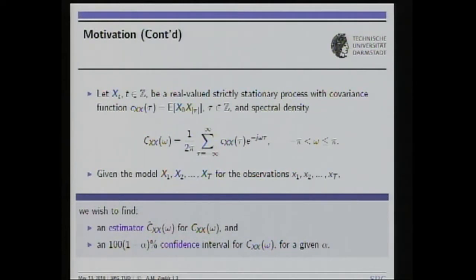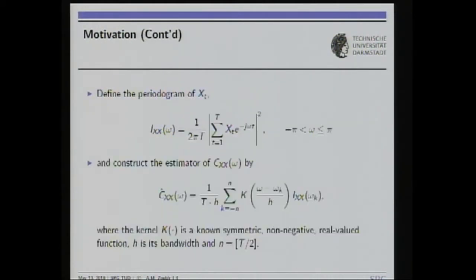Suppose we have a discrete-time, real-valued, strictly stationary time series x_t with a bounded covariance function. We define the spectrum via the Wiener-Khinchin theorem as the Fourier transform of the covariance function. Given observations x_1 to x_T, we would like to estimate the spectrum C_xx(ω) and also give some measure of accuracy of our estimator — for example, a confidence interval for C_xx(ω).